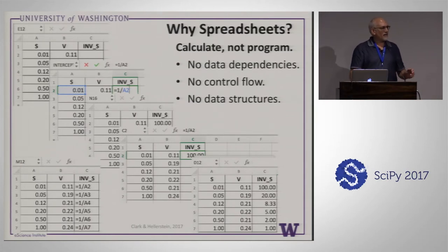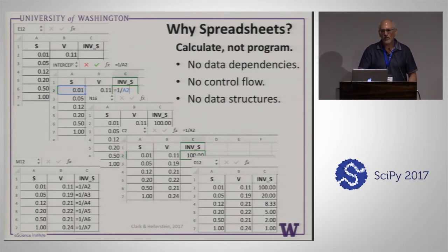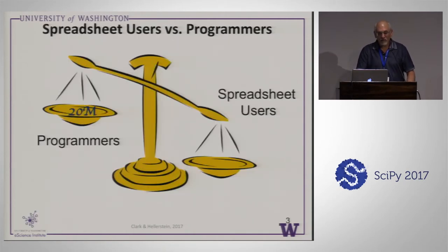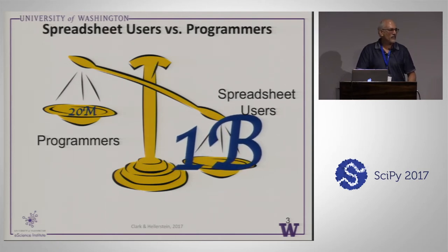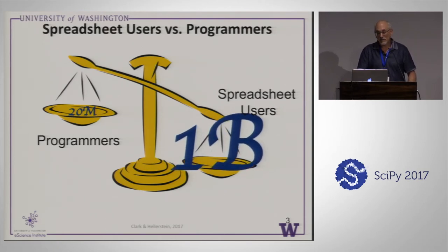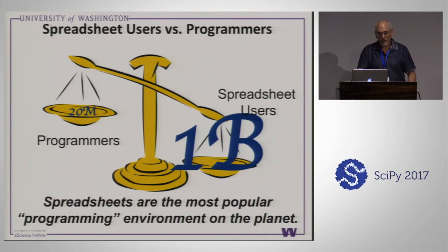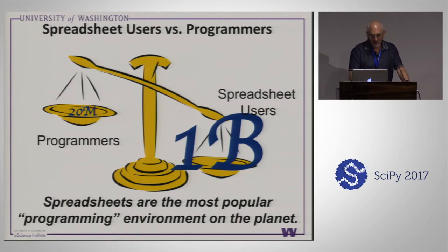Programming has been around for a very long time — it dates back to Ada Lovelace, 150 years ago. Real programming using machines arguably comes from the Second World War, about 70 years ago. Electronic spreadsheets are relatively new, probably dating to the 70s. If you look at the difference, there are around 20 million professional programmers today, but about a billion spreadsheet users — people who use formulas. So it's probably the most popular environment for calculations on the planet.